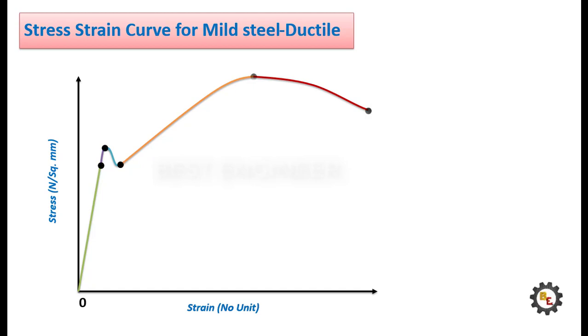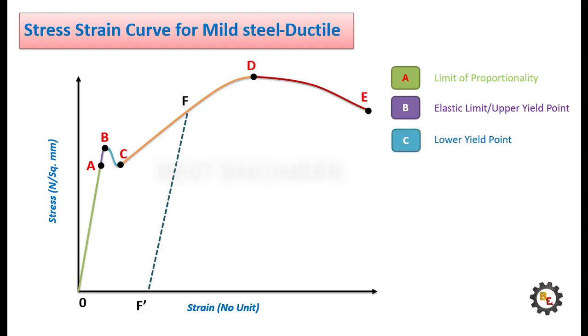There are 5 points A to E over the curve. Point A is limit of proportionality. Point B is elastic or upper yield point. Point C is lower yield point. Point D is ultimate stress point. Point E is breaking point.